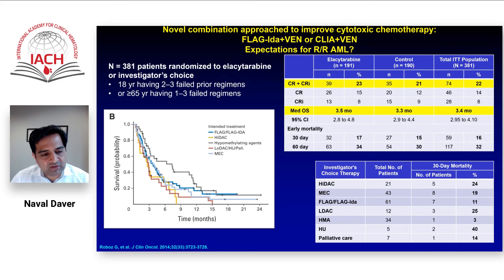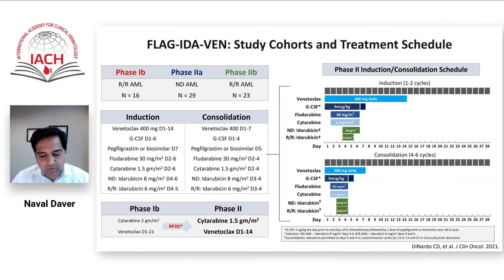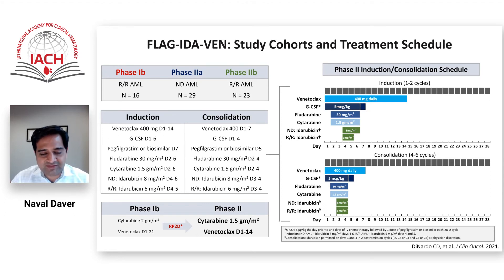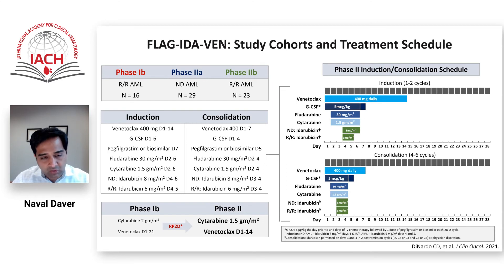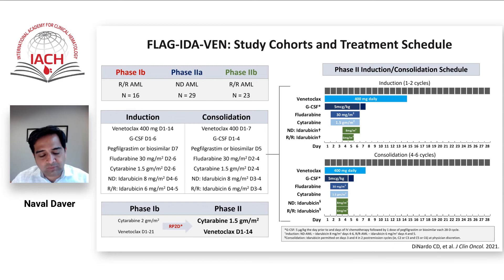So you could get a response and some benefit, but overall this was quite depressing. So we asked, venetoclax is so good in combination with HMA and IDH — what would it do in combination with intensive chemotherapy? Would it be tolerable, and would it increase the depth of response? Our regimen of FLAG-IDA venetoclax was published very recently in the JCO by Dr. DiNardo. We adjusted venetoclax down to 14 days, cytarabine to 1.5 grams per meter squared, and dropped the idarubicin dose — those modifications because we knew the addition of venetoclax would cause cumulative myelosuppression.